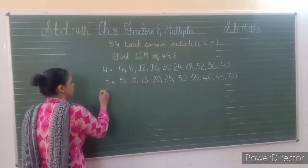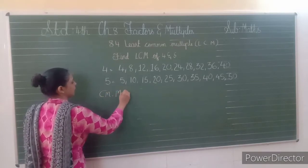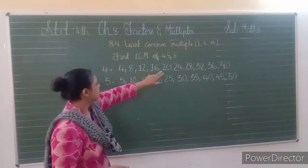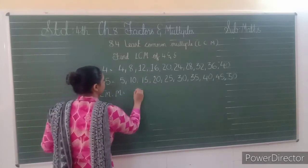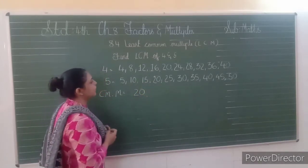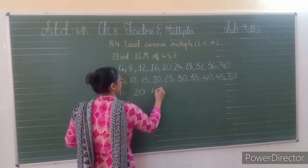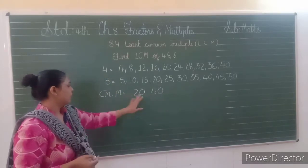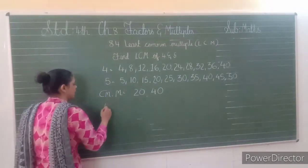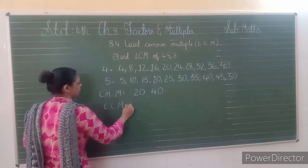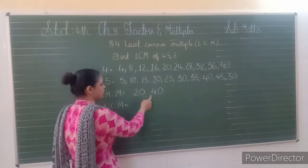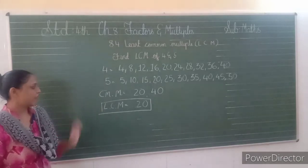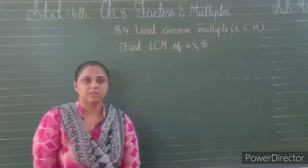Let us find out the common multiples. We will find out the same numbers in both. 4 does not come in multiples of 5, 8 is not there, 12 is not there, 16 is not there, but 20 is present in both — so we write 20. Then 40 is also common. So 20 and 40 are the common multiples of 4 and 5. The LCM is the smallest number, so 20 is the LCM of 4 and 5.